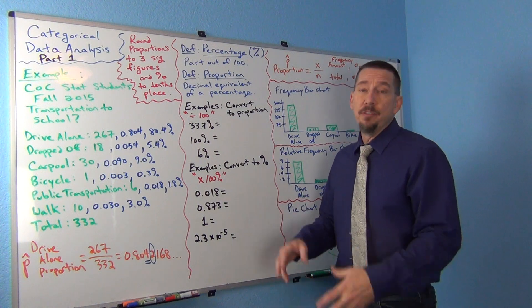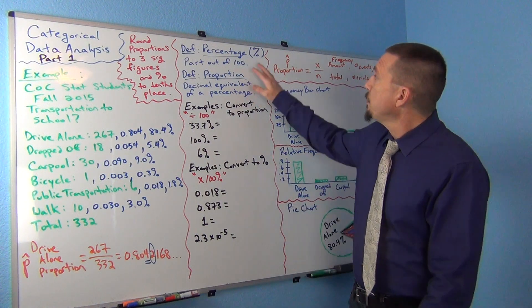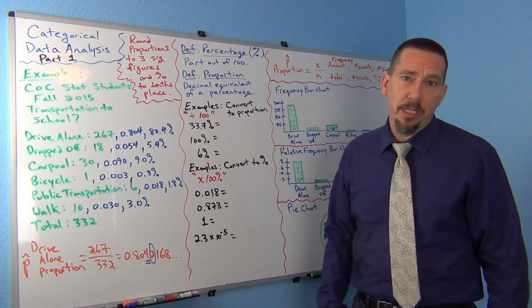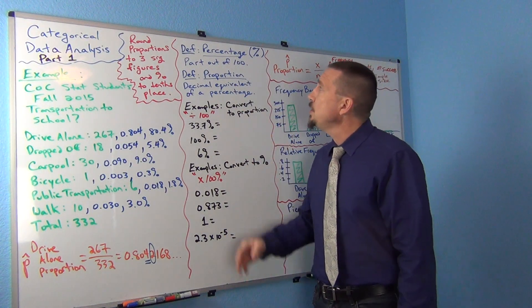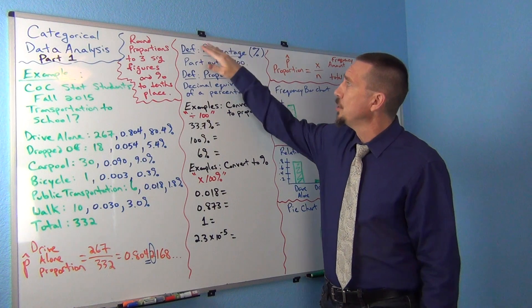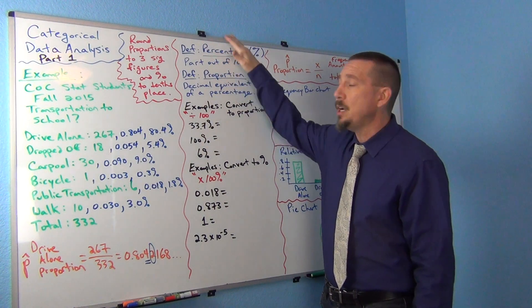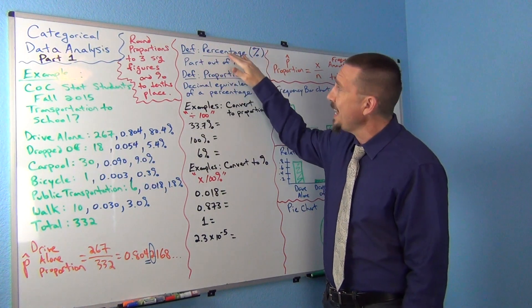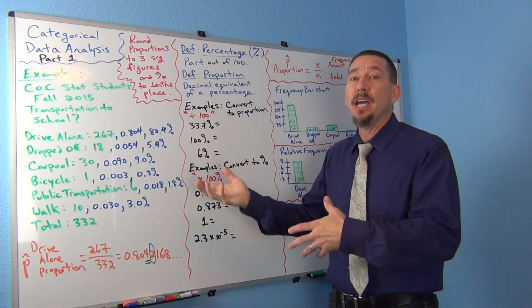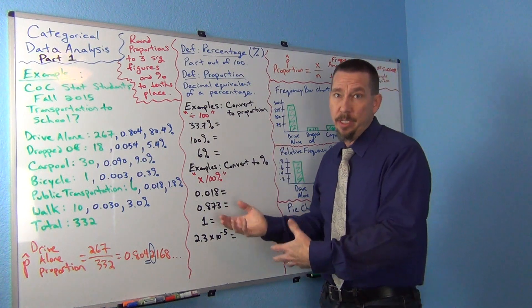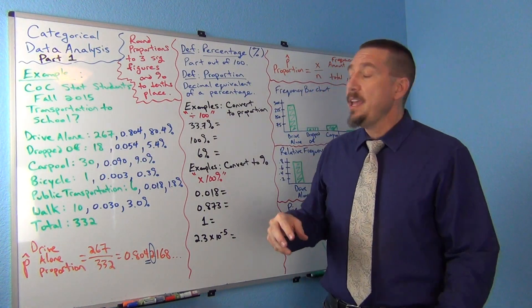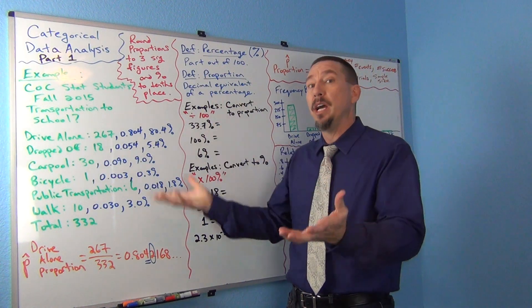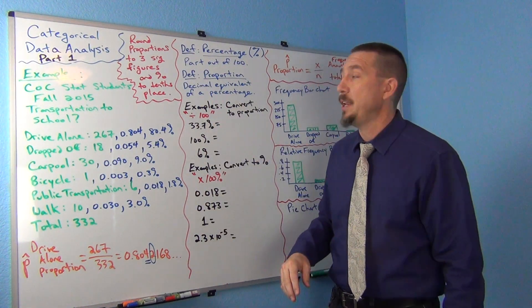This is probably a review for a lot of you, but think of a percentage as a part or an amount out of 100. Even the word 'percent' — 'per' means divide or out of, 'cent' comes from the Latin where we get the word hundred. So the word percent means out of 100 or divided by 100. When we say 35%, we are saying 35 out of 100.